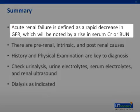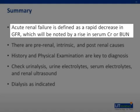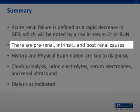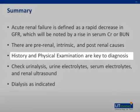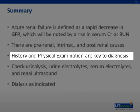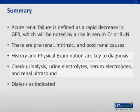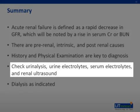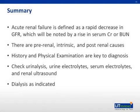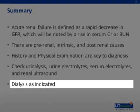In summary, acute renal failure is defined as a rapid decrease in GFR, noted by a rise in serum creatinine or BUN. There are prerenal, intrinsic, and postrenal causes. History and physical examination are key to making the diagnosis. Be sure to check urinalysis, urine electrolytes, serum electrolytes, and a renal ultrasound. Always remember: use dialysis when indicated.